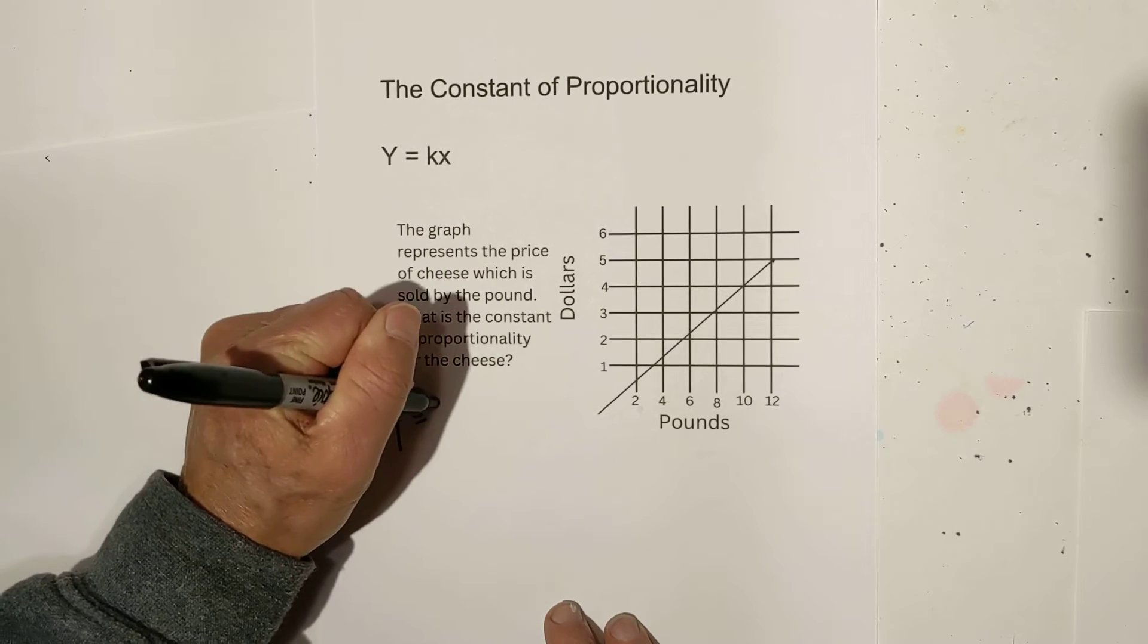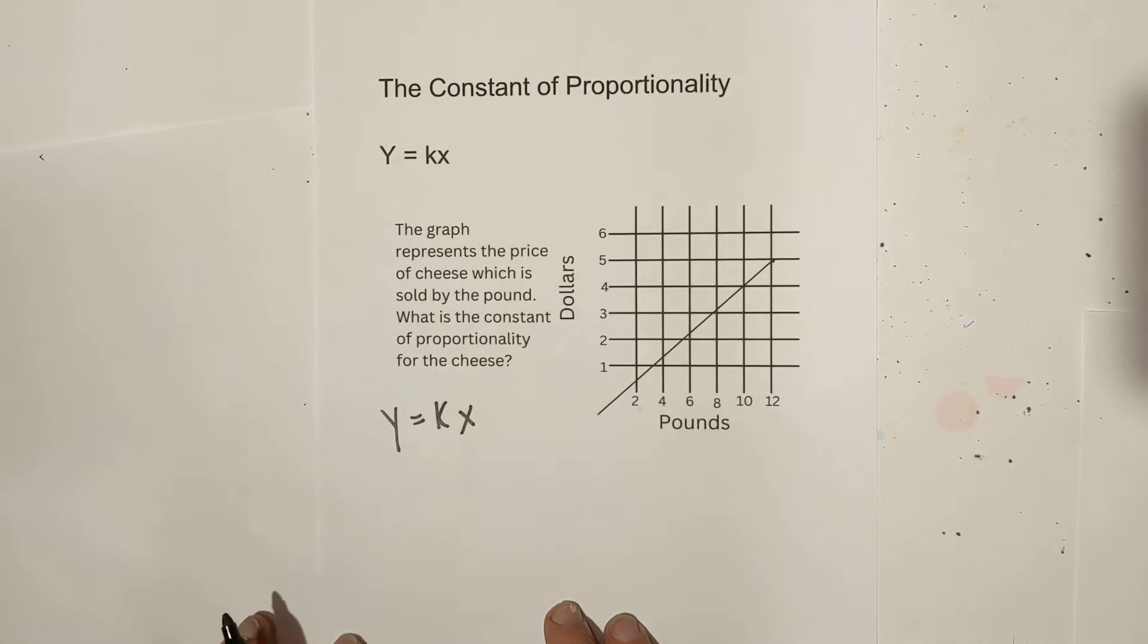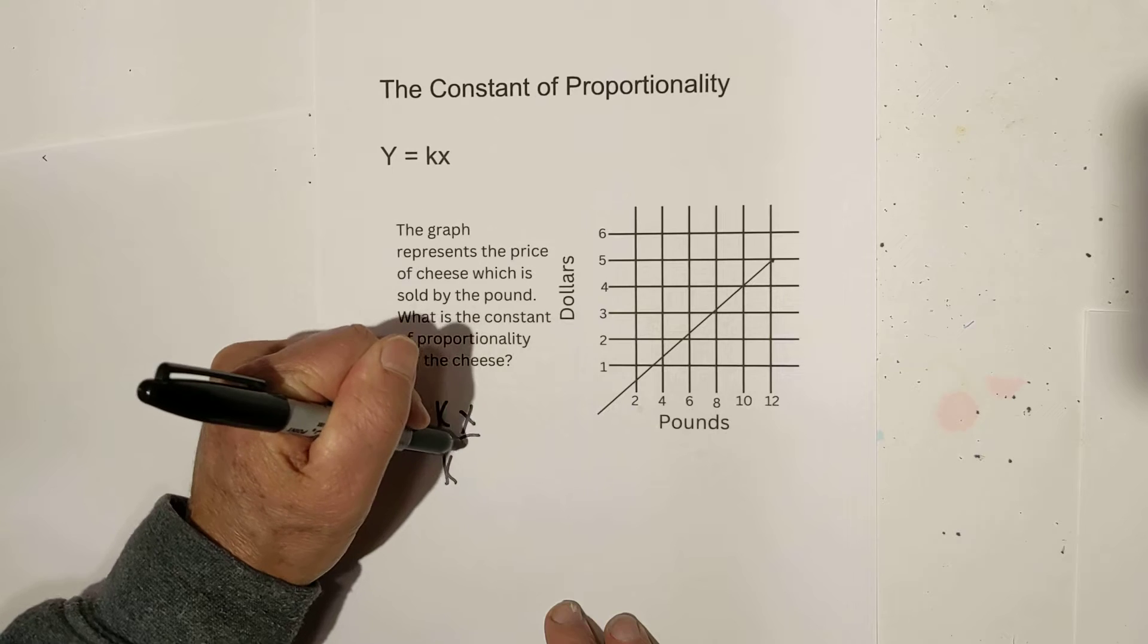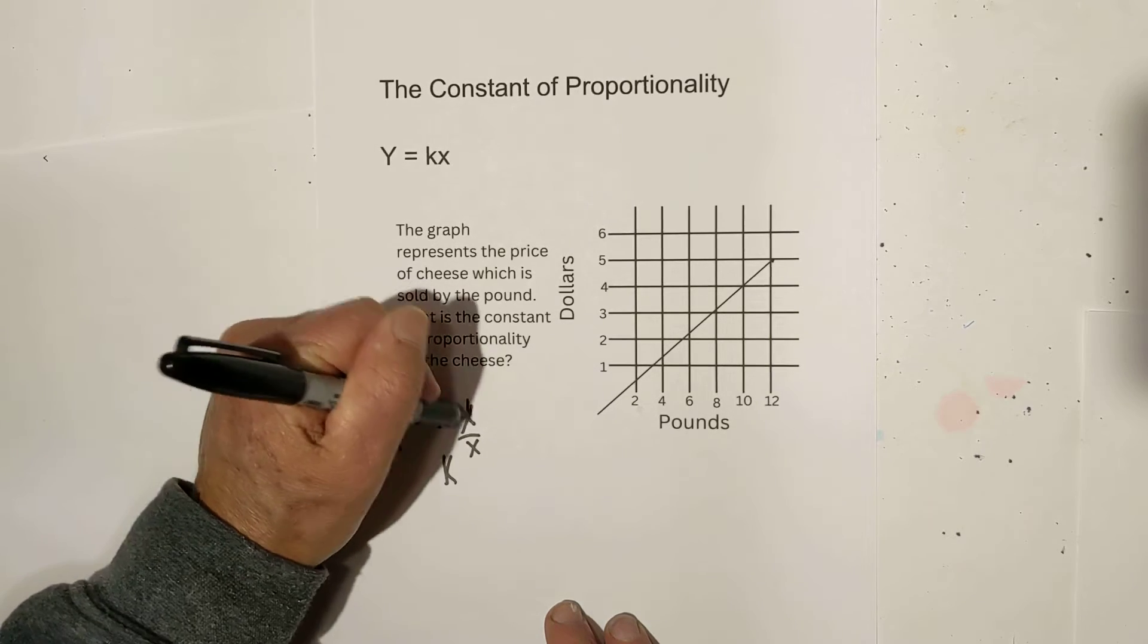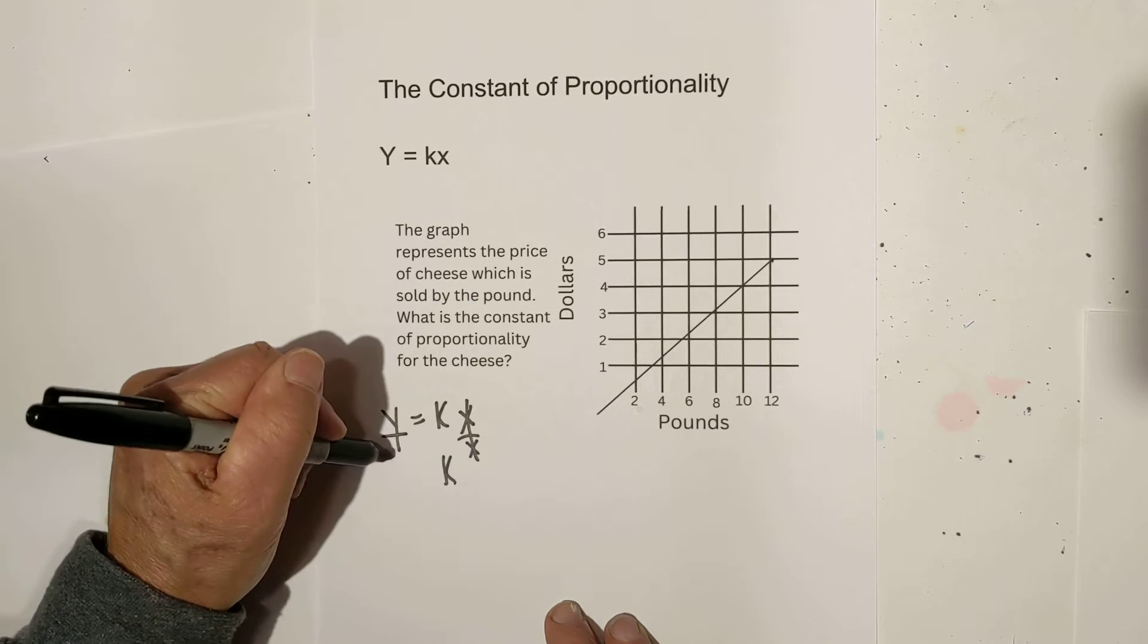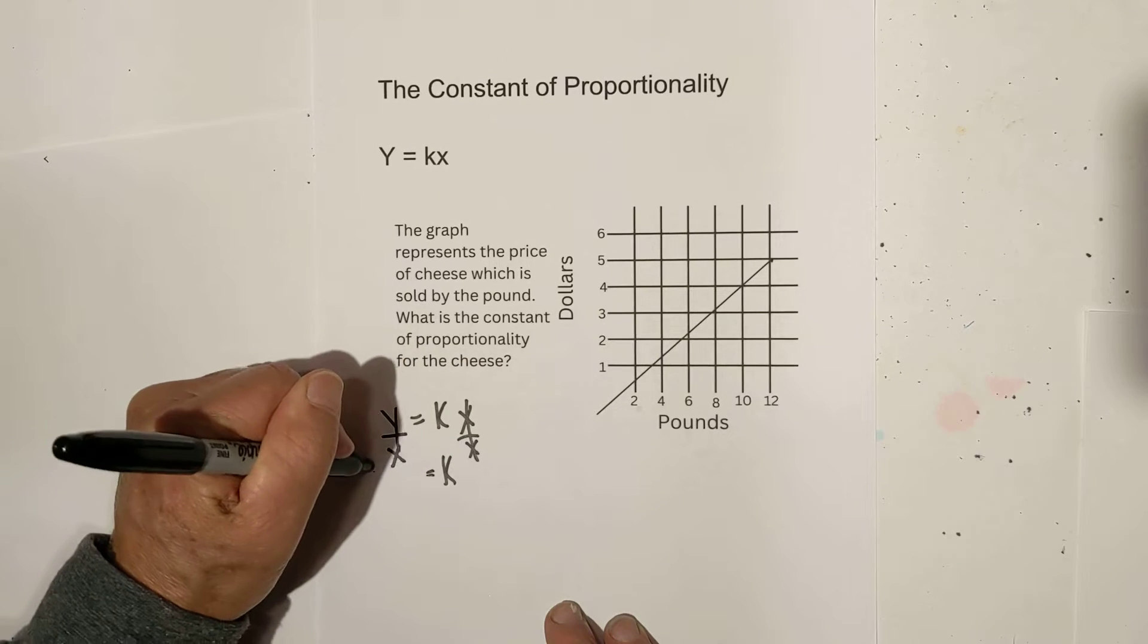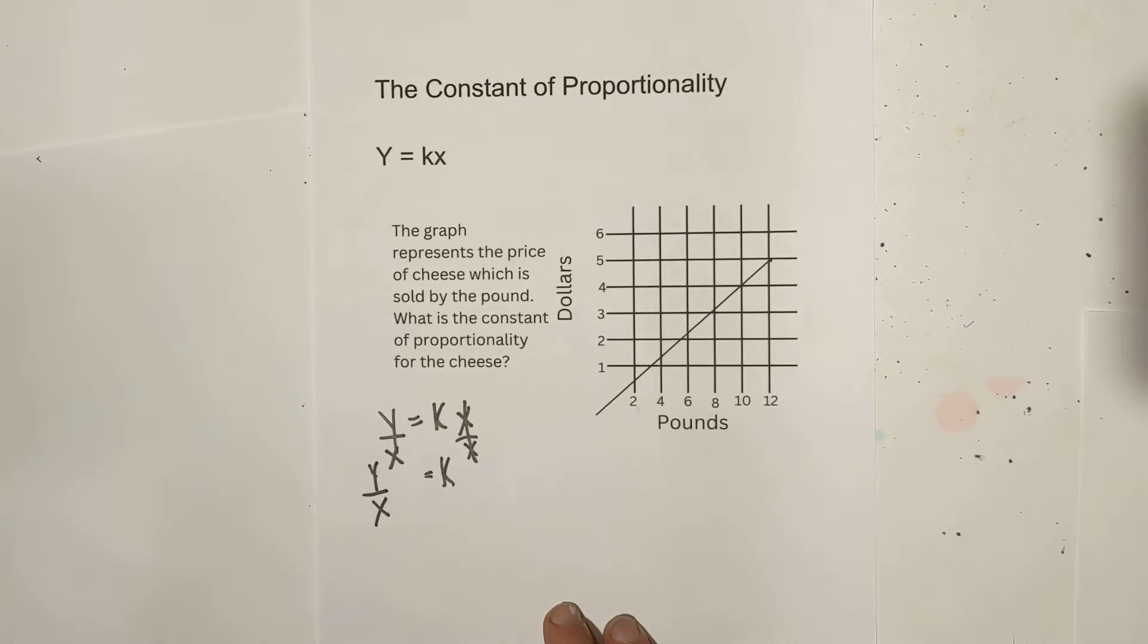Let's do this. If y is equal to the constant times x, let's solve for k. We're going to divide each side by x. These cancel. Divide the y by x. So, k is equal to y divided by x.